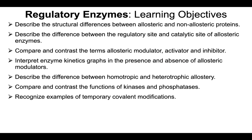To summarize, make sure you can describe the structural differences between allosteric and non-allosteric enzymes, describe the difference between the regulatory site and catalytic site, compare and contrast allosteric modulator, activator, and inhibitor, interpret enzyme kinetics graphs with and without allosteric modulators, describe the difference between homotropic and heterotropic allostery, compare and contrast the functions of kinases and phosphatases, and recognize examples of temporary covalent modifications.